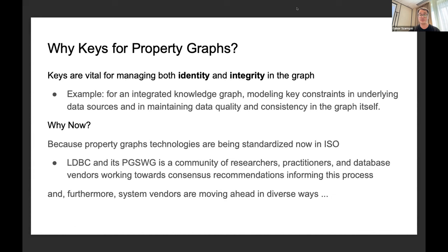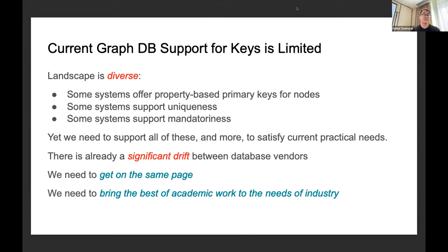This might be a little bit out of date because we did this in prep for the SIGMOD 2021 paper. At that time, the landscape was diverse. We found that some systems offer just property-based primary keys just for nodes, not edges. Some systems supported reasoning about uniqueness, some about mandatoryness. Yet we need all of these and more to satisfy current practices. Because of this significant drift of database vendors, it became clear we need to get on the same page.